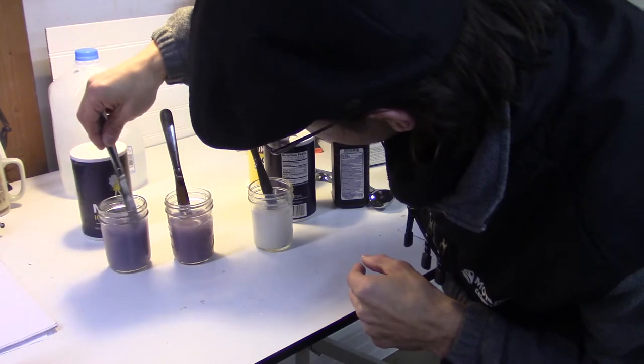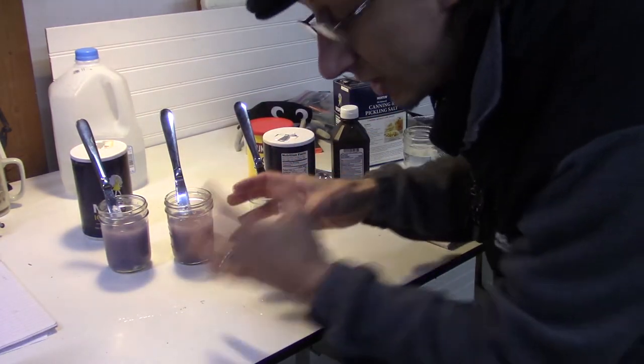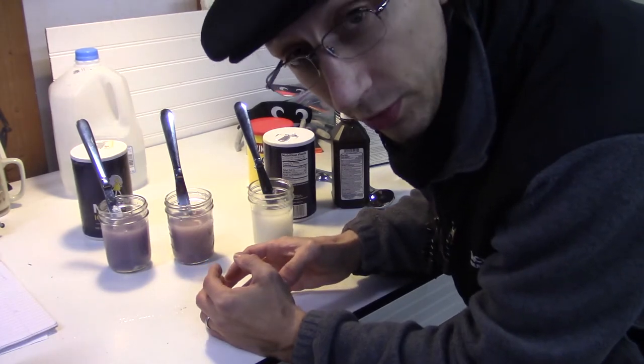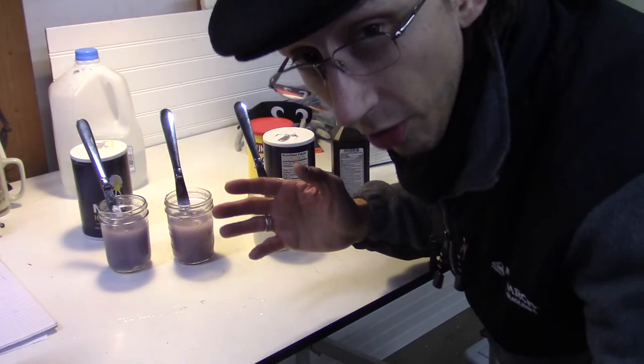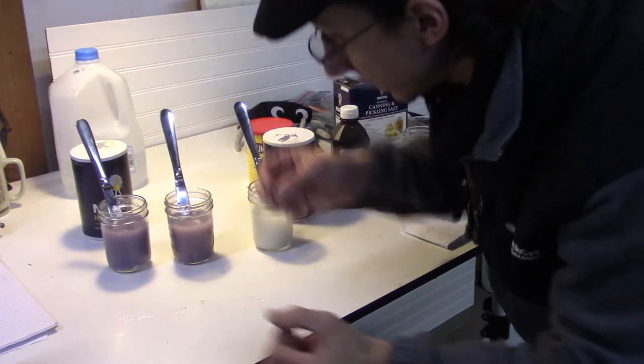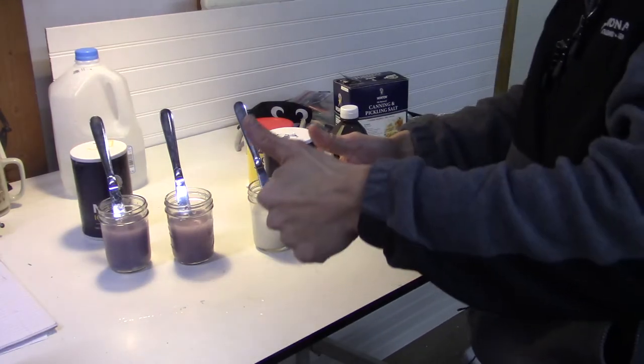Because what happens is when the starch goes in, it attaches to the iodine, and the reason that it darkens is because the orbitals change. And so instead of just reflecting all the light that's coming in here, it's absorbing some of the light, which is what, you know, makes something dark. Looking good. Alright, last step here is vitamin C.